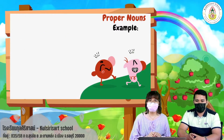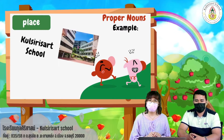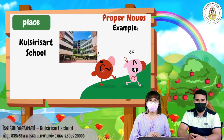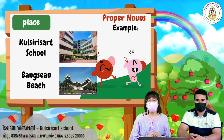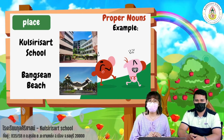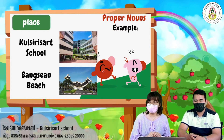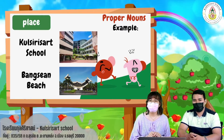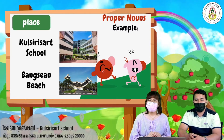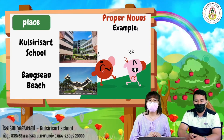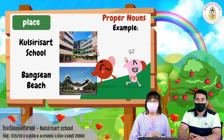Next example, place — first, our school called Syriza School, and Bang Sen Beach. As you can see, the school starts with a big letter, and Bang Sen Beach starts with a big letter B.